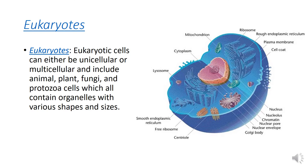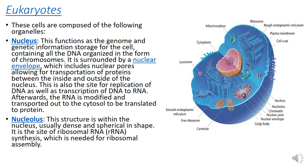Eukaryotic cells can be either unicellular or multicellular and include animal, plant, fungi, and protozoan cells, all of which contain organelles with various shapes and sizes. These organelles are found between and within the body of the cells. Eukaryotic cells are composed of the following organelles.